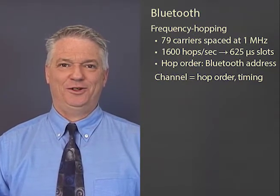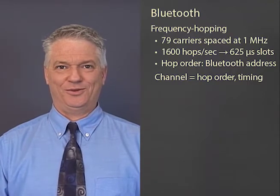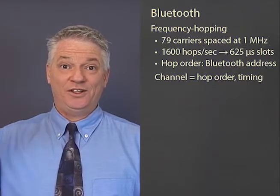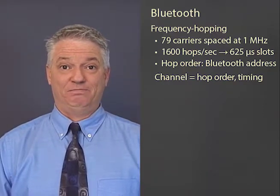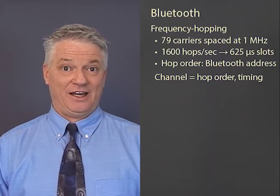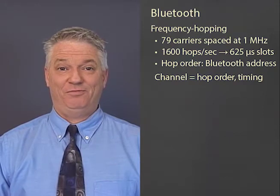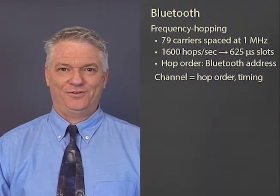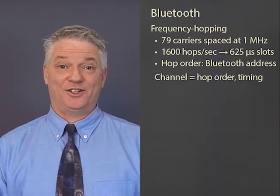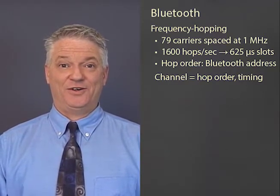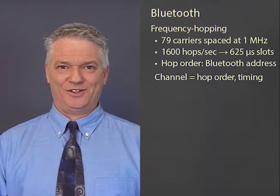The channel is determined by the master. There are masters and slaves in a Bluetooth world. The master decides what the frequency hopping pattern is, and it decides this based on its Bluetooth address, which is like a MAC address — a hard-coded number on the Bluetooth chip. Every 625 microseconds we change to a different frequency, and that time period is called a slot. The master transmits in even-numbered slots, and the slave transmits in odd-numbered slots.